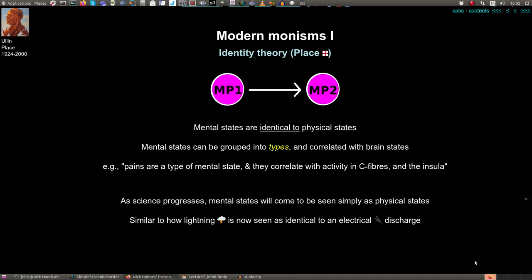Identity theory gets a little technical when discussing types and tokens, but essentially they say that various kinds of mental states can always be correlated with a particular type of brain state. For example, pain is a type of mental state and pains correlate with types of physical states — activity in the C fibres of the peripheral nervous system or in the insula of the brain.